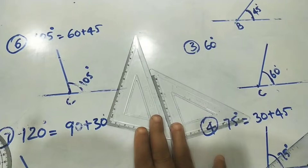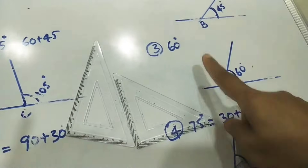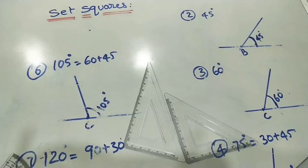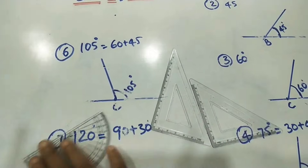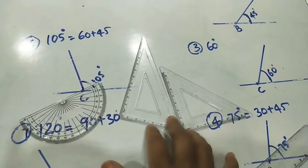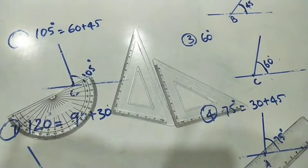Using set squares, we can mark all these angles. Without a protractor also, we can mark angles by using set squares.